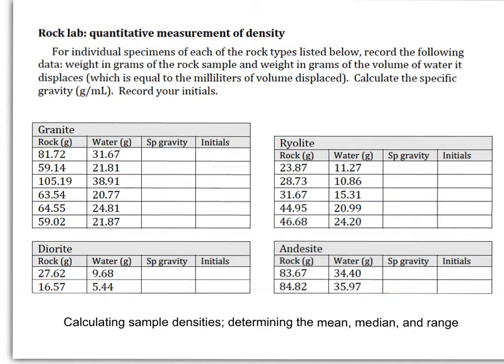Basalt, rhyolite, andesite, crystallized from lava above ground. They cool off very quickly. There's no time for large crystals to grow. So if you look at a piece of basalt, it's all very fine-grained. You don't see large crystal structures.